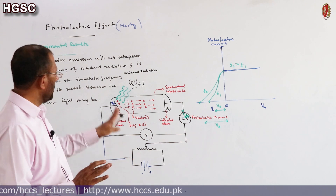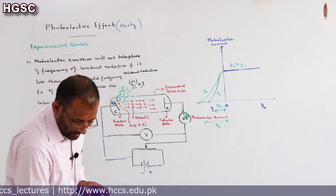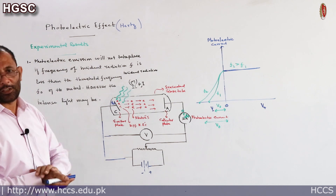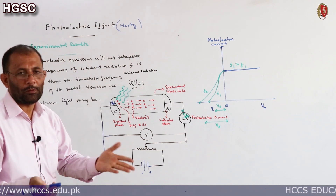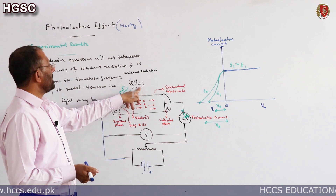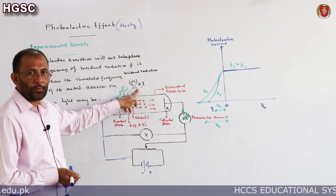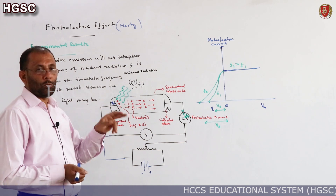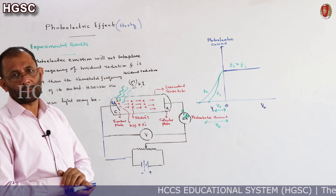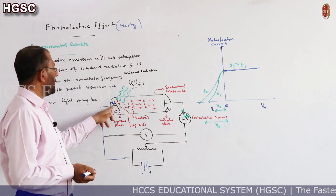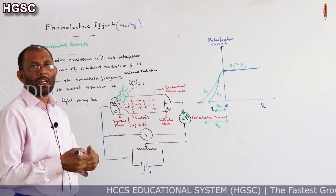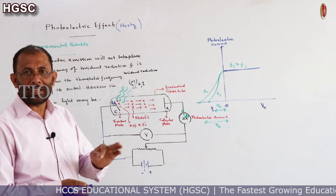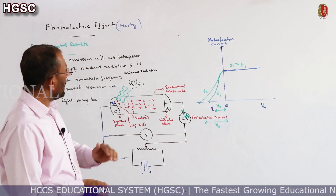Experimental result number 2: photoelectric emission will take place when the frequency of incident radiation F is either equal to or greater than the threshold frequency of the metal surface. If F becomes equal to or greater than F0, photoelectric emission will occur.